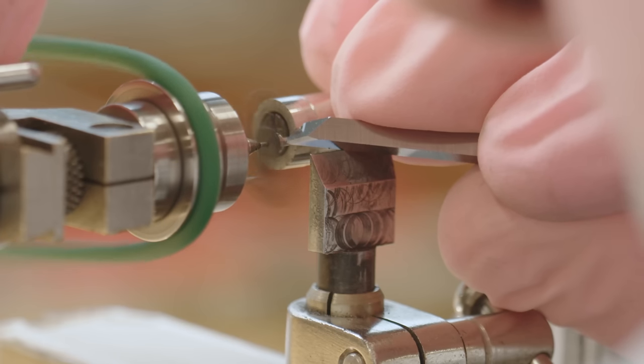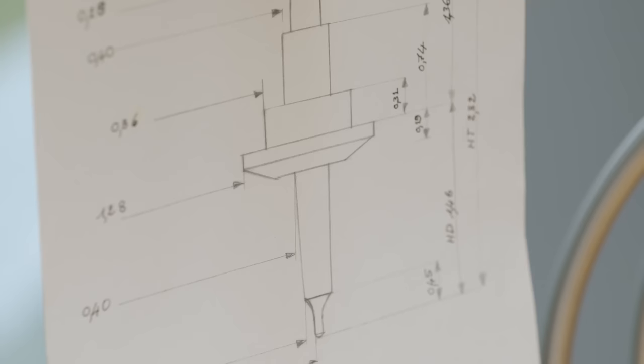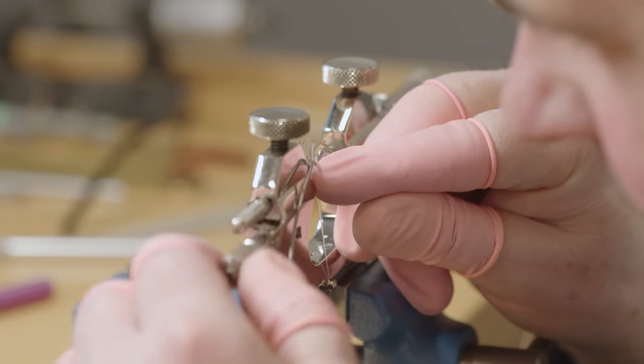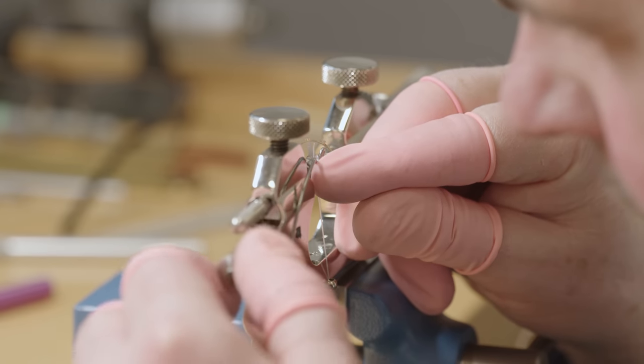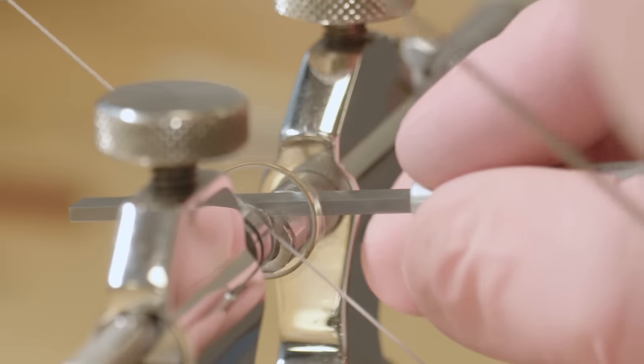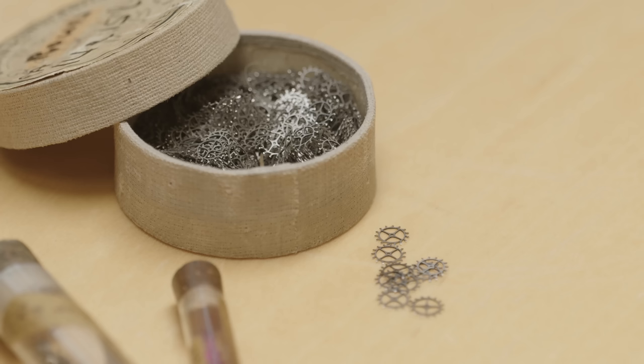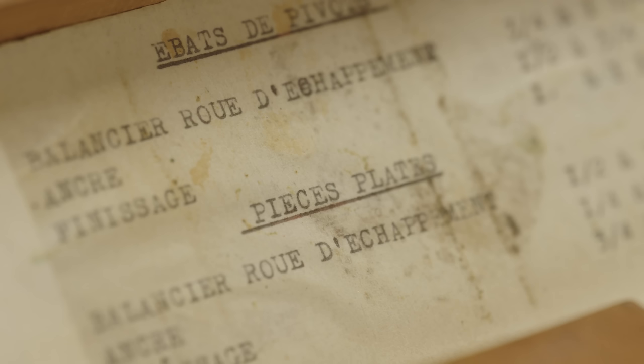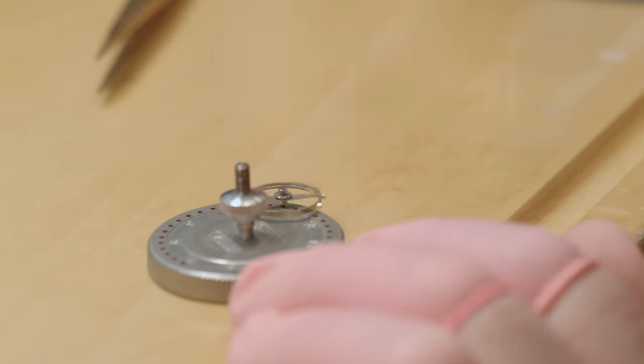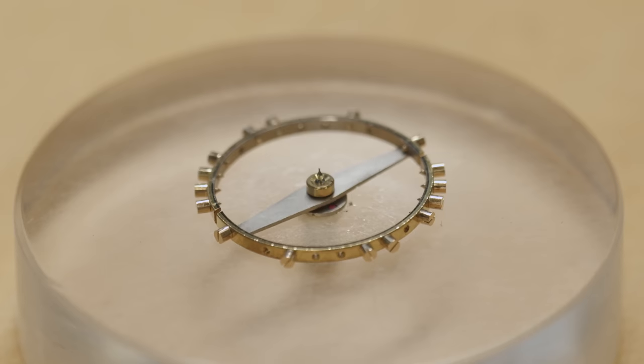Fine adjustments are made to the balance staff—the shaft that runs through the center of the balance wheel—to reprofile it for better performance. This is done entirely by hand on the very same equipment watchmakers used to make the watches in the first place. It's painstakingly slow work, but it means the watch will continue to run for many more decades and even centuries.